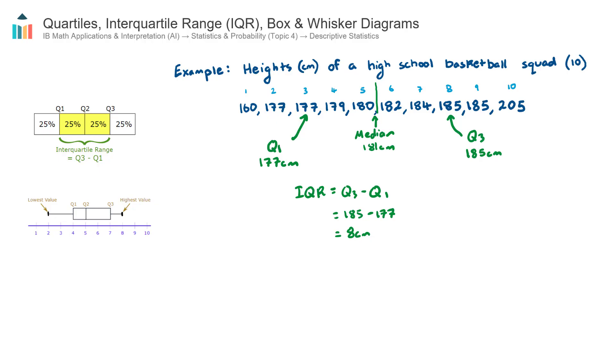And they are the minimum value, the lower quartile, the median, the upper quartile, and the maximum. And once you find those five pieces of information, you can then just overlay this shape here, which is what we call a box and whisker diagram.